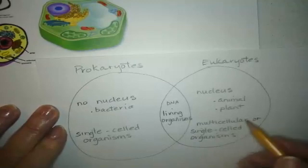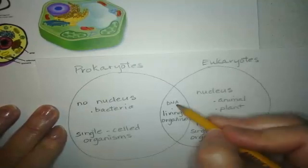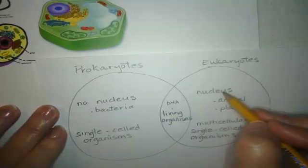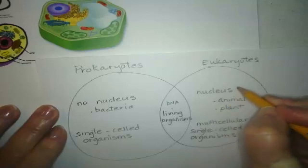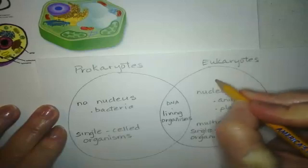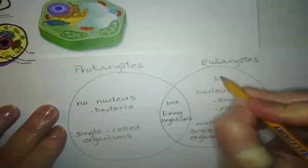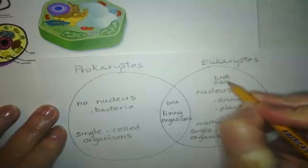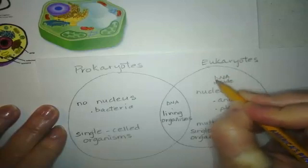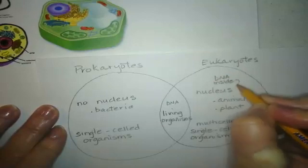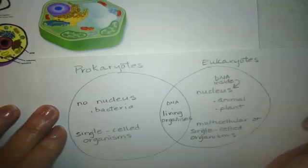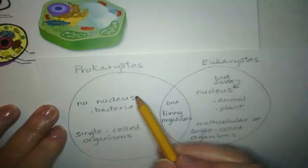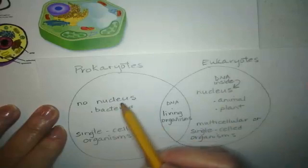DNA is in both, but the nucleus is going to hold the DNA — so I'm going to put the DNA inside the nucleus for the eukaryote. The DNA just floats freely over here on the prokaryote side.